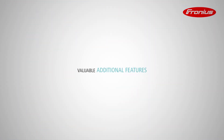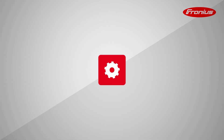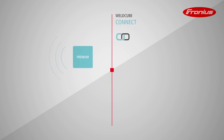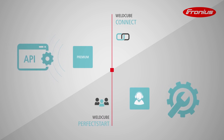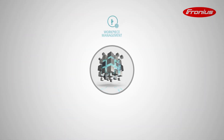WeldCube Premium also offers valuable additional features. Thanks to continual further development and regular updates, your software is kept constantly up to date. WeldCube Connect allows data from WeldCube Premium to be transferred to other software solutions via Web API. WeldCube Perfect Start means that a Fronius expert is there to support you during the installation and commissioning of your WeldCube solution and also to train your software users.